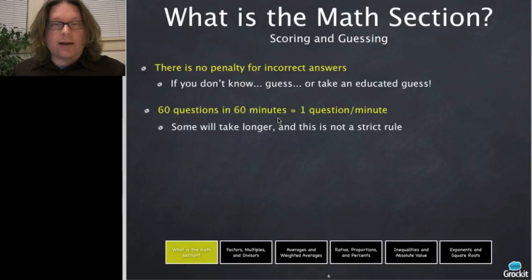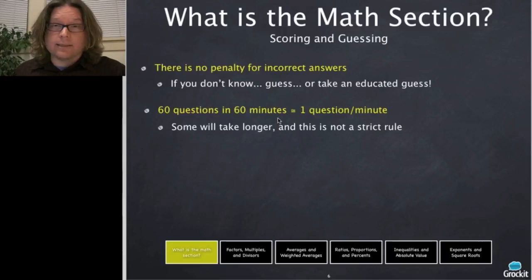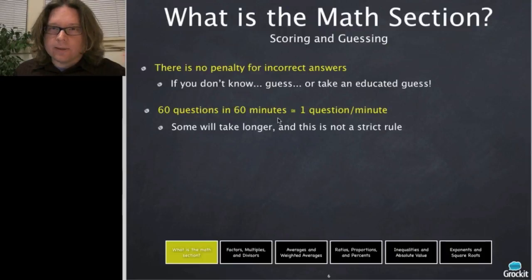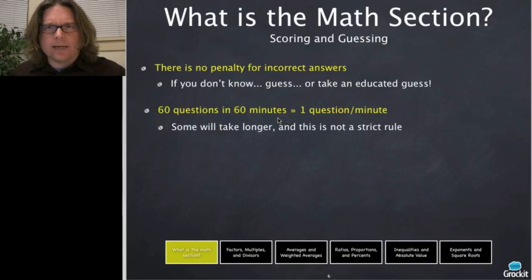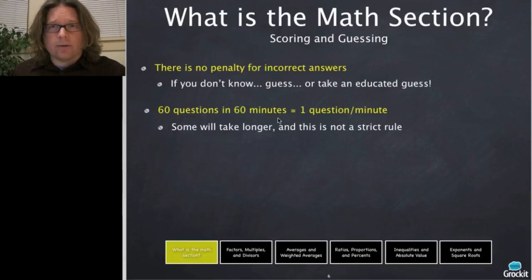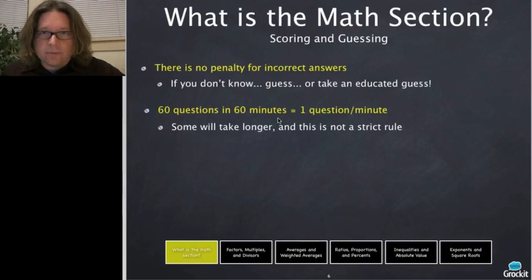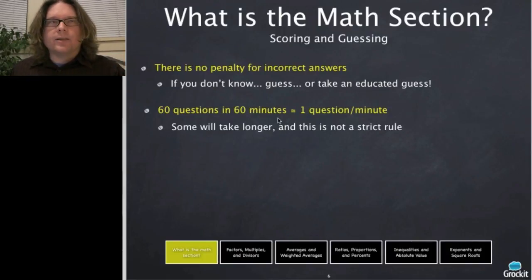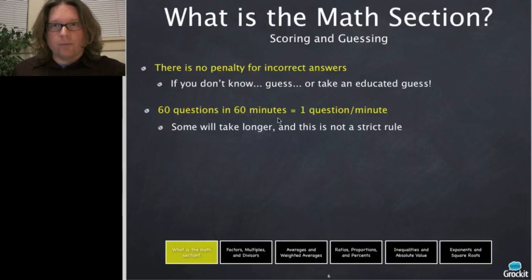There are strategies for educated guessing. The test is 60 questions in 60 minutes — that's one minute per question on average, though it's not a strict pace. Some questions by nature take less time, others more, and that varies by your strengths. Know that you have to average this pace and be able to finish. If you can't get to an answer, just put something down and move forward.